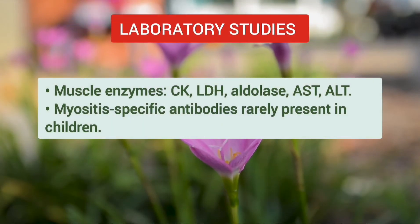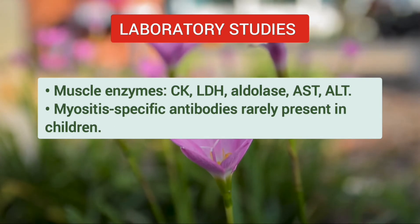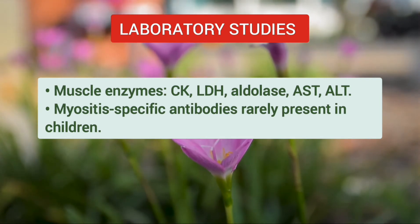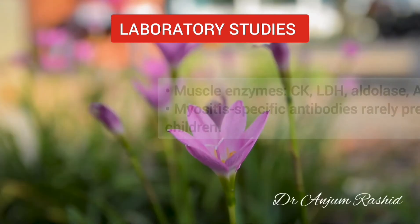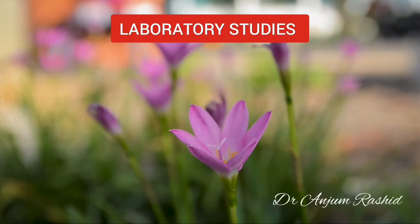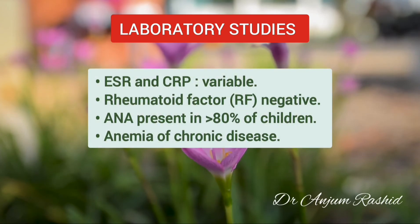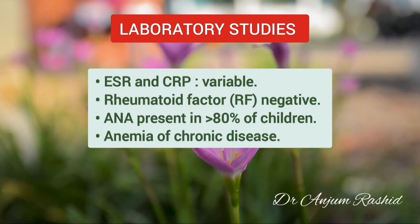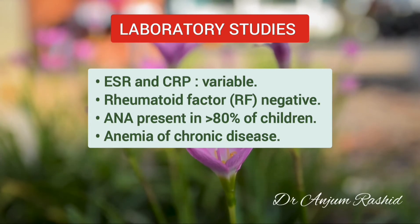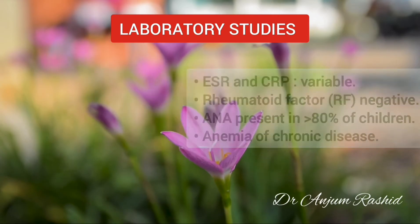Laboratory studies reveal elevated muscle enzymes including creatine kinase, lactate dehydrogenase, aldolase, aspartate transaminase, and alanine transaminase. Myositis-specific antibodies are rarely present in children. ESR and CRP are variable, rheumatoid factor is negative, antinuclear antibodies may be present in more than 80% of children, and there is anemia of chronic disease.